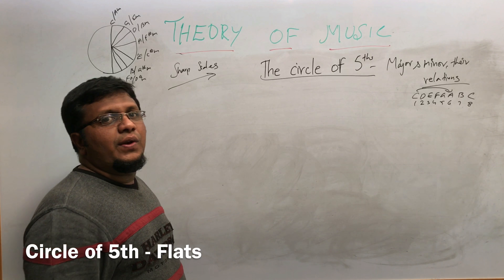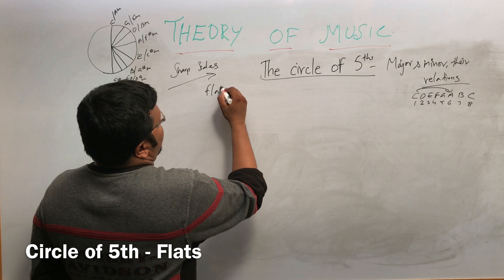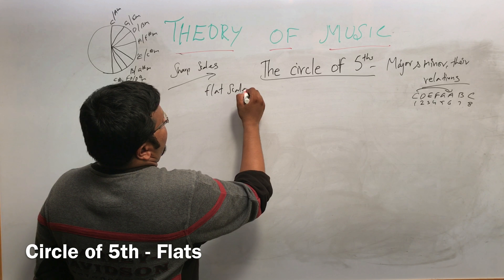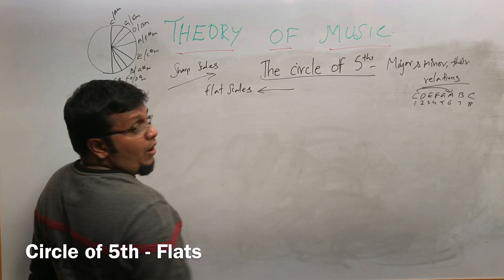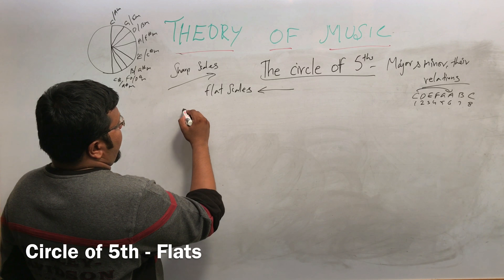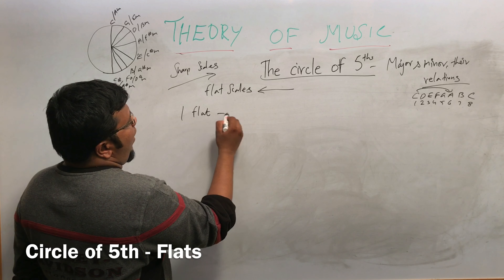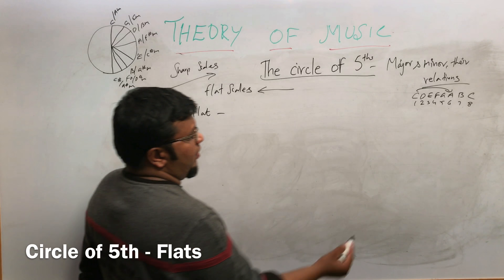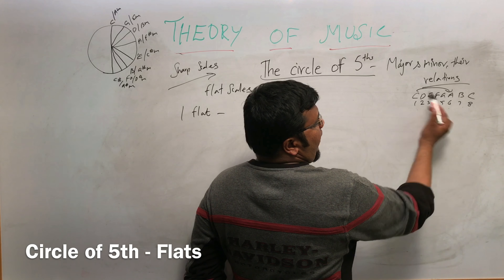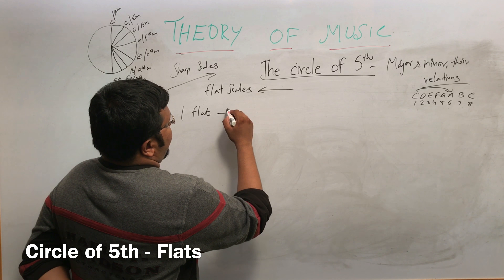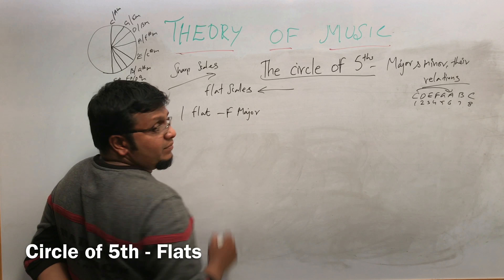Now we are going to learn the flat scales. It will be like going down. The one-flat scale is found by counting five notes back: one, two, three, four, five — that is called F major scale.